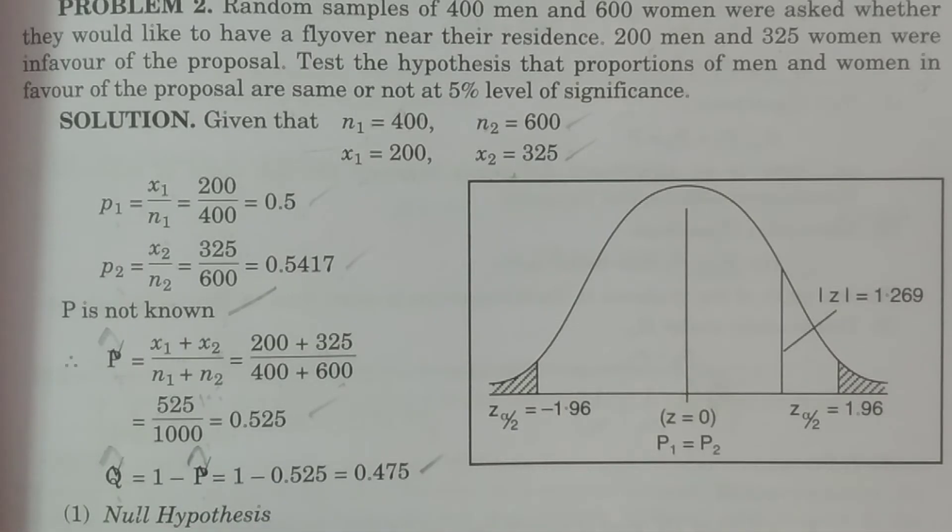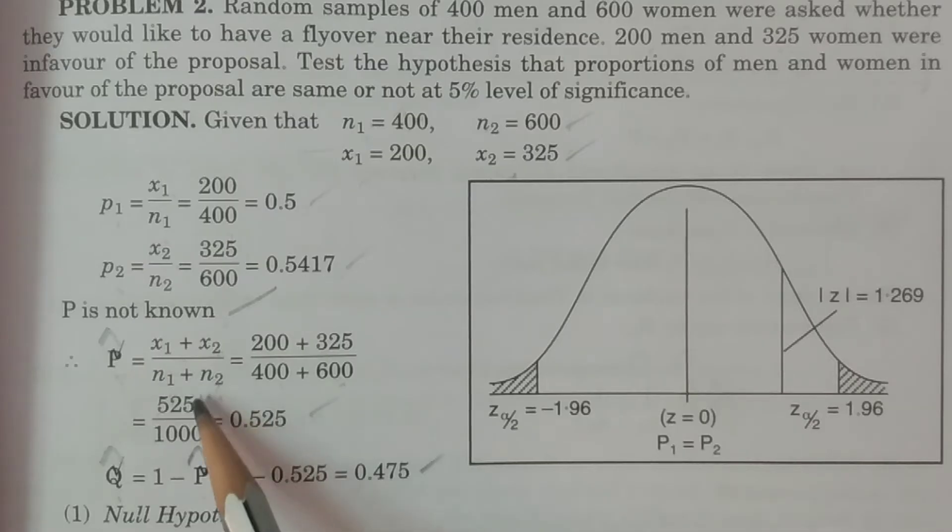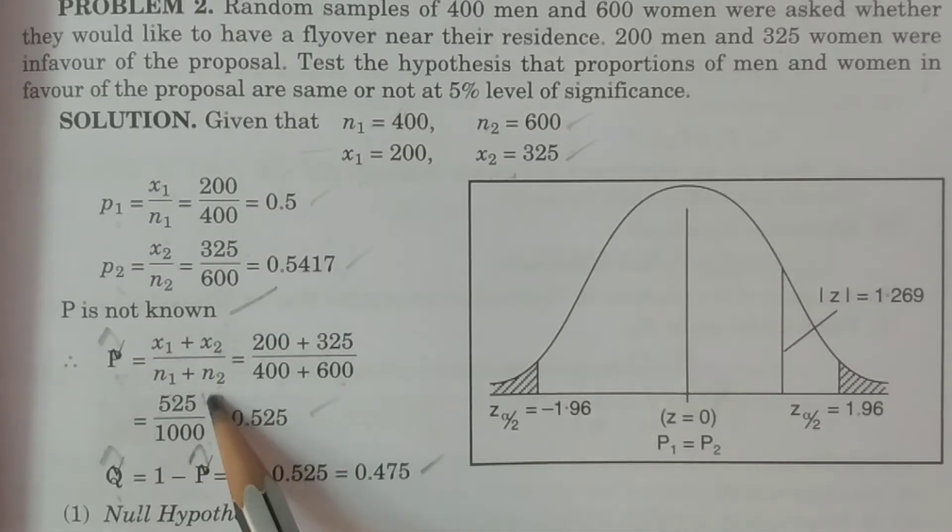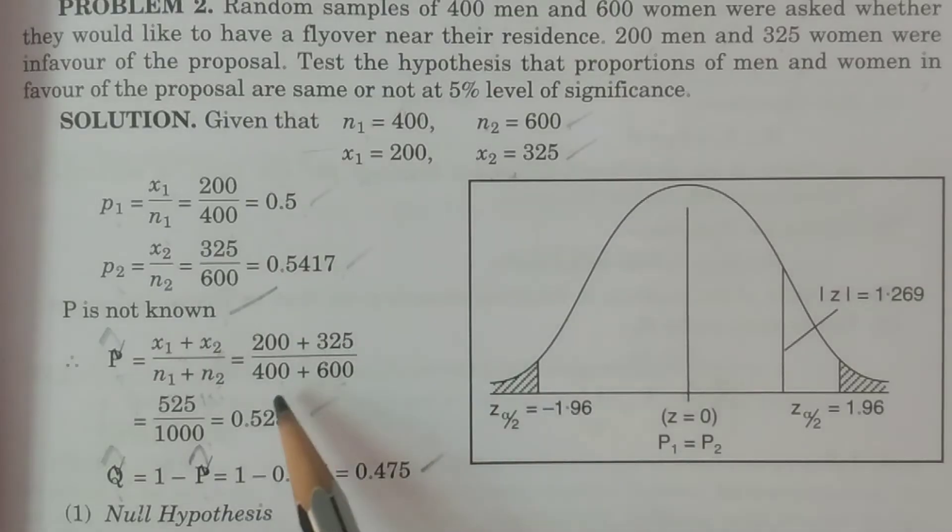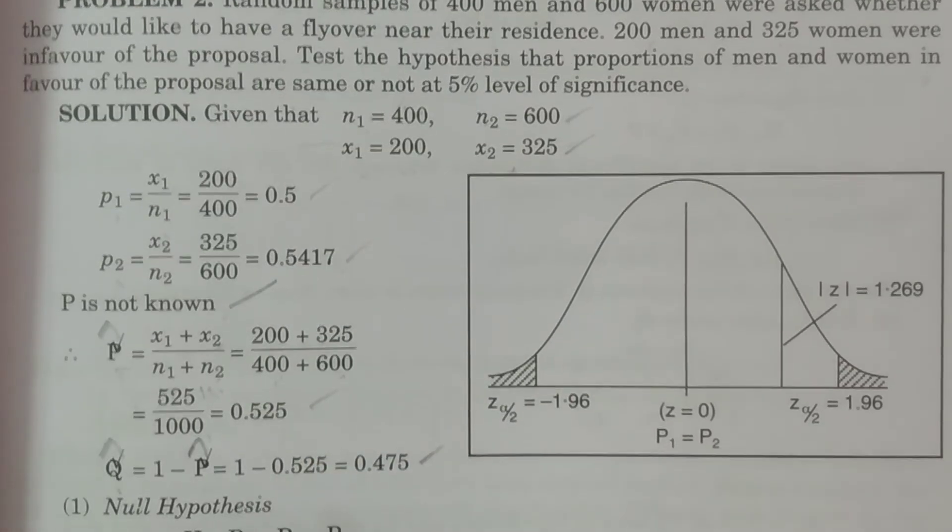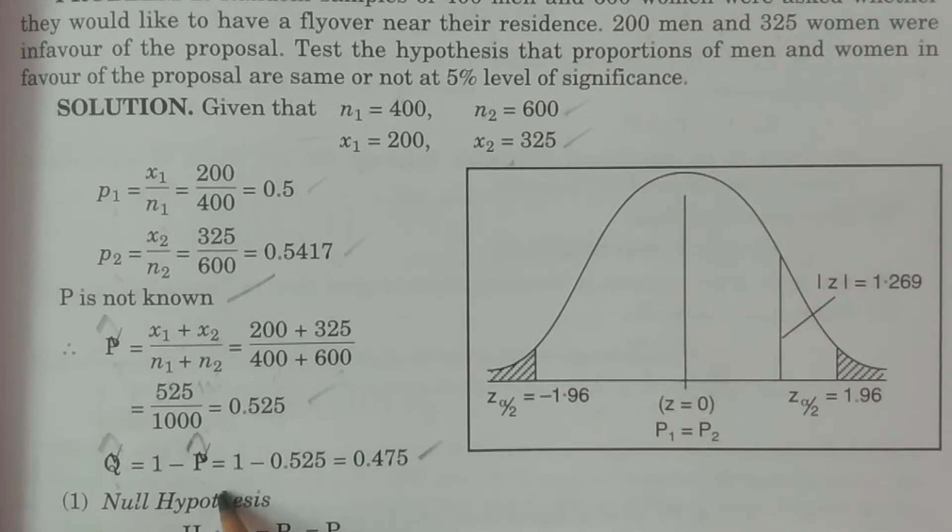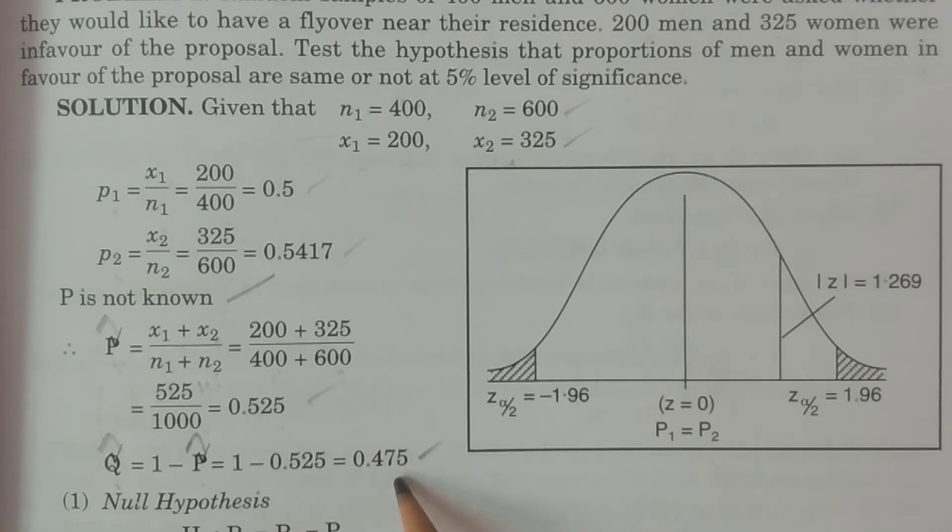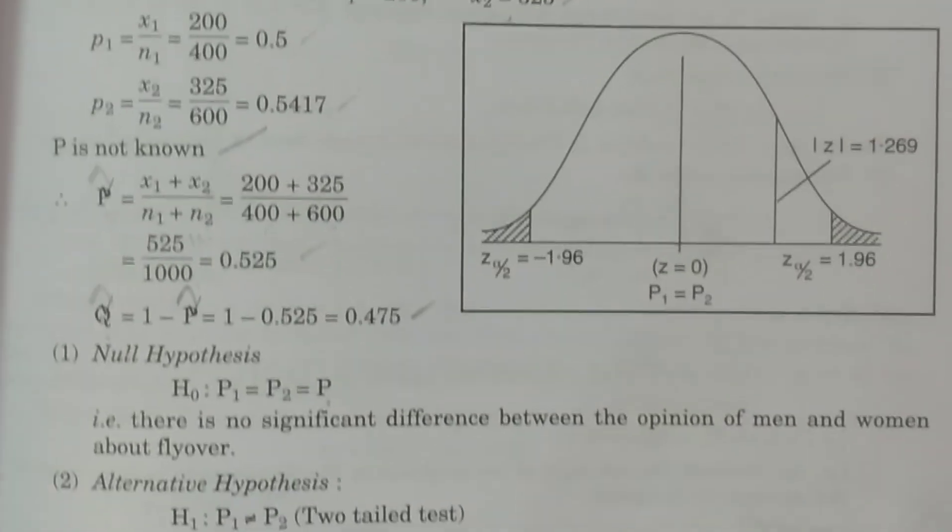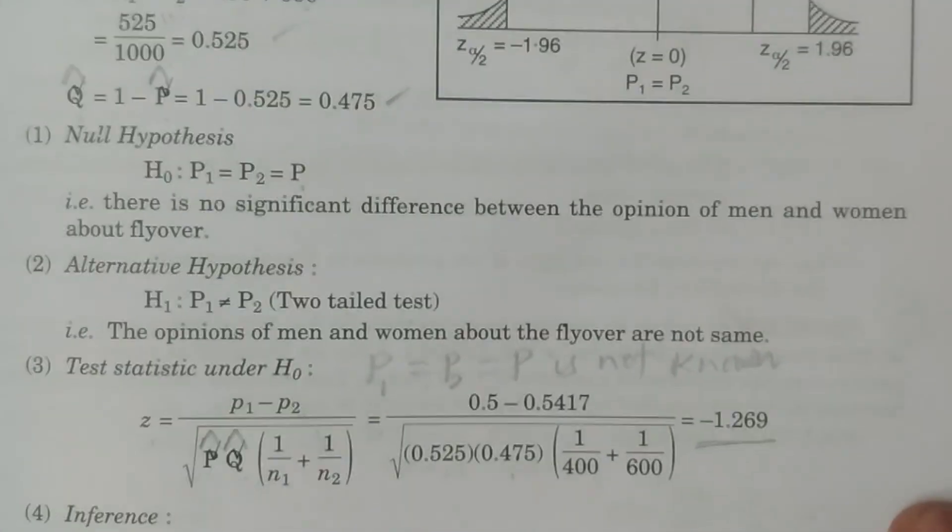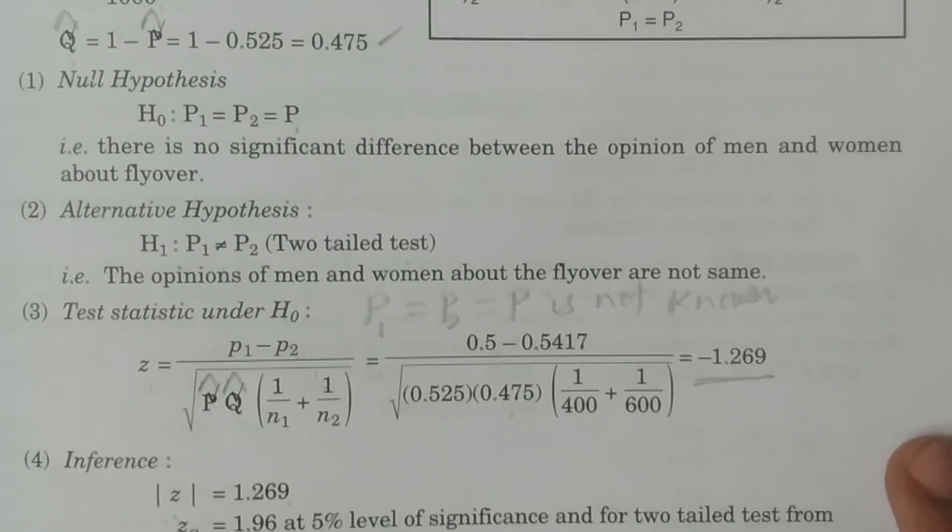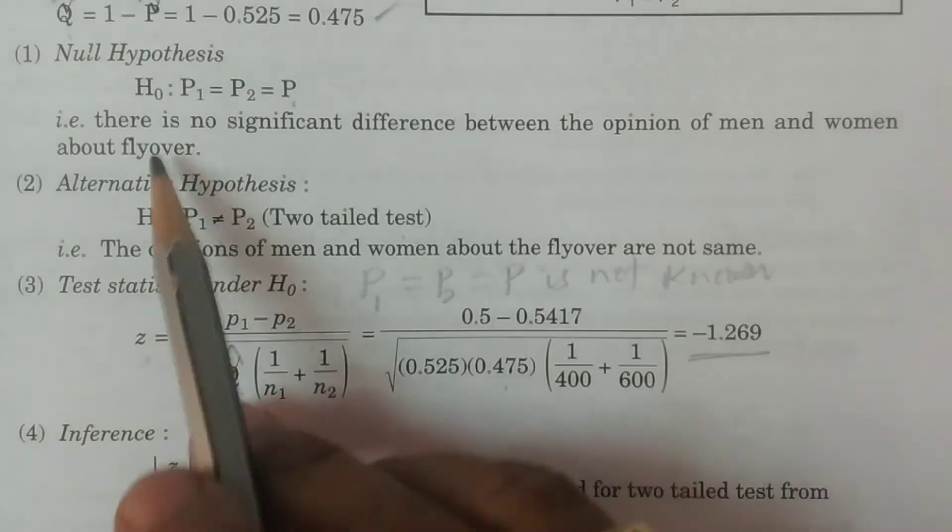Capital P cron formula is x1 plus x2 divided by n1 plus n2. Alternatively, n1P1 plus n2P2 divided by n1 plus n2. So x1 plus x2 divided by n1 plus n2 equals 200 plus 325 divided by 400 plus 600, which equals 0.525. Q cron equals 1 minus P cron, which is 1 minus 0.525, equals 0.475.